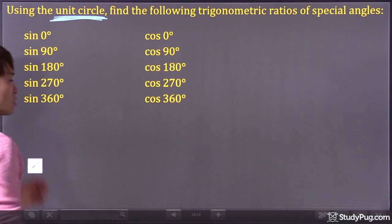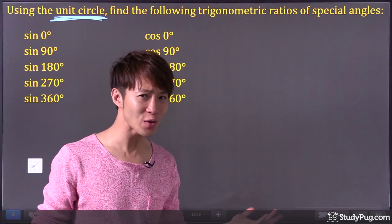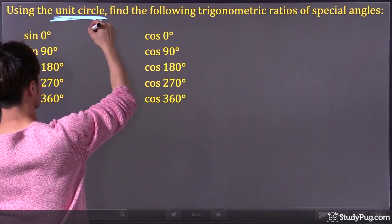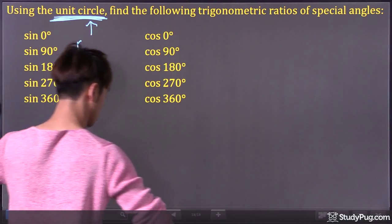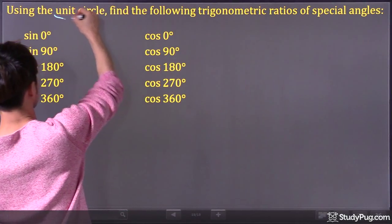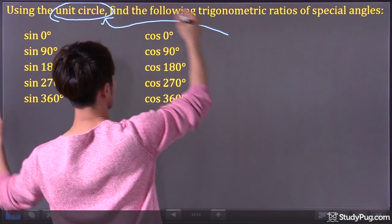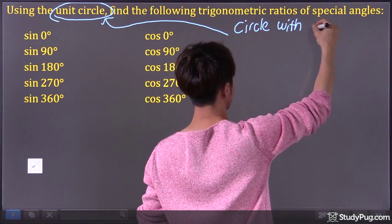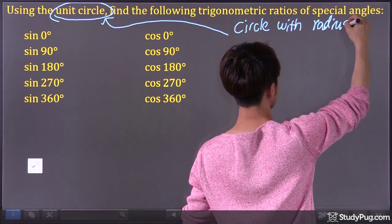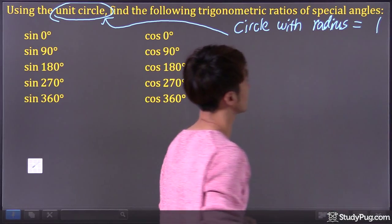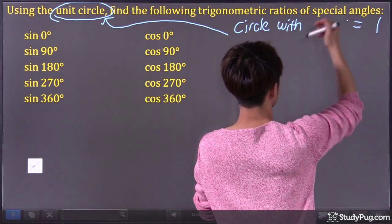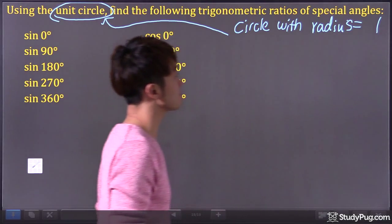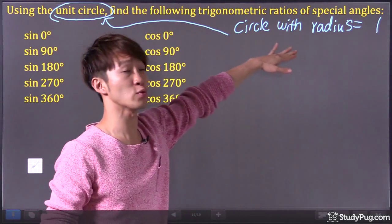So first of all, what is a unit circle? A unit circle is nothing crazy. It's just a circle with radius equal to 1.